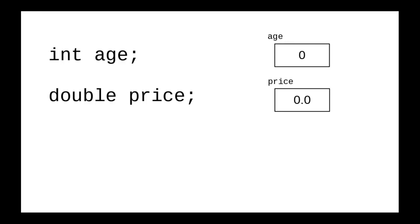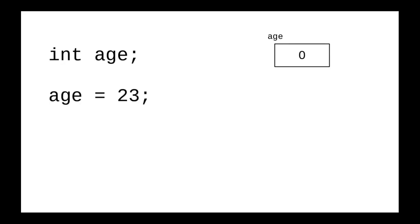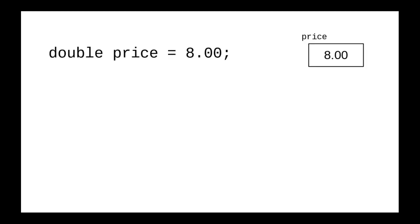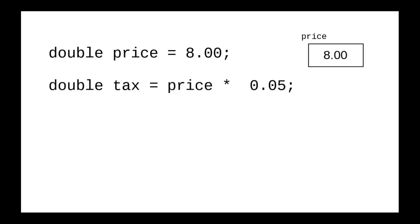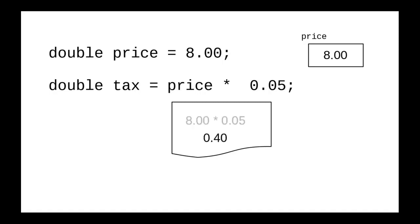You can assign new values to variables. Let's assign a value to age. The way Java does this is to look at the right-hand side, figure out what it works out to — in this case 23 — and then that is stored in the variable on the left-hand side, replacing whatever used to be there. It's also possible to declare a variable and give it a value in one step. In this case, the right-hand side works out to 8, and that gets stored in the newly declared variable price. For an assignment statement like price times 0.05, we always start with the right-hand side. price is 8.00, we multiply by 0.05 and get 0.40, and only then do we look at the left-hand side: the variable 'tax' is to receive that value.